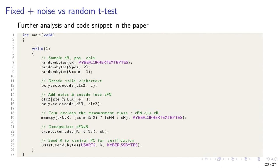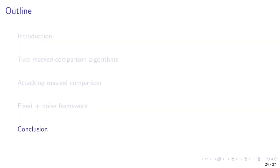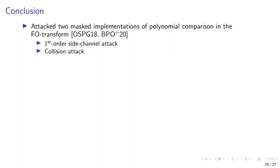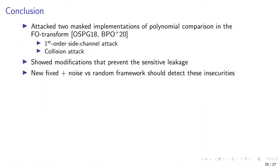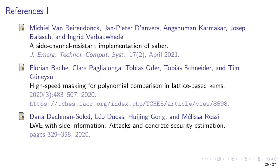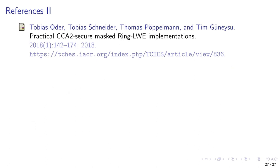In our paper, we further analyze our framework and also provide a code snippet so that you can conduct the fixed plus noise versus random t-test yourself. To conclude our work, we attacked two masked implementations of polynomial comparisons in the FO transform, both with a first-order side-channel attack and with a collision attack that does not need any side-channel information. We also showed how to modify the methods to prevent the sensitive leakage. Finally, we proposed a new fixed plus noise versus random framework that should serve to detect these insecurities in the future, and we proposed reduced comparisons as a straightforward fix to the higher-order method, believing there is interesting future work in a more efficient higher-order masked comparison method.